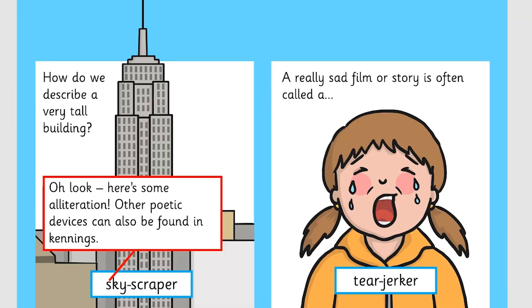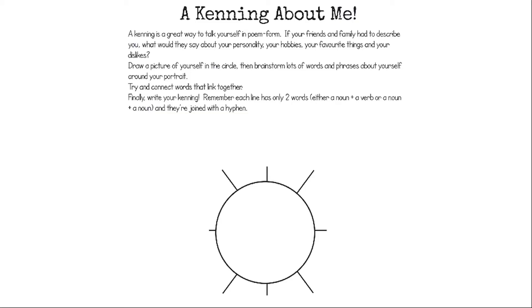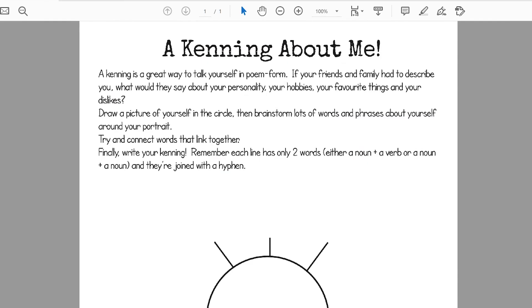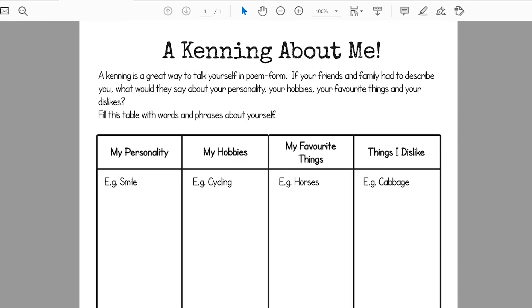Work through the presentation to learn how kennings work. Then use the planning sheet to help write your own. Two different sheets are provided, so see which one your child prefers.